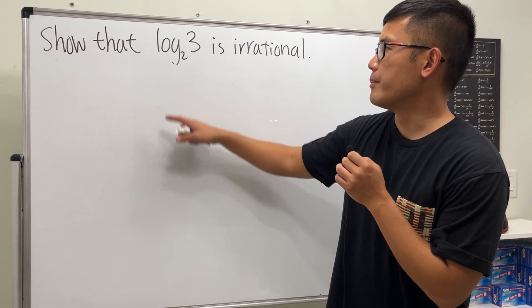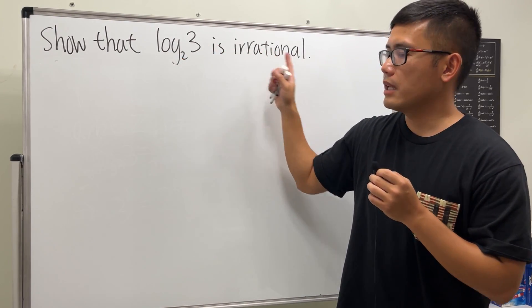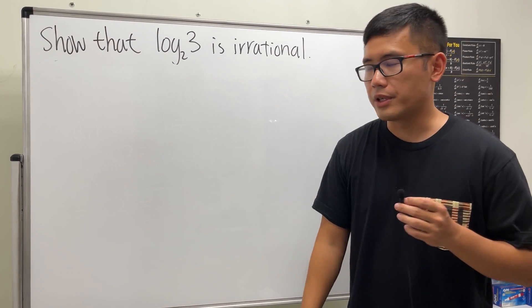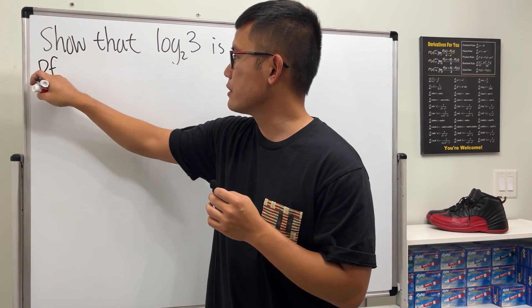All right, here I'm going to show you guys how to prove that the number log base 2 of 3 is irrational by using contradiction. So here we go, let's go ahead and write down 'Pf' to start off with.